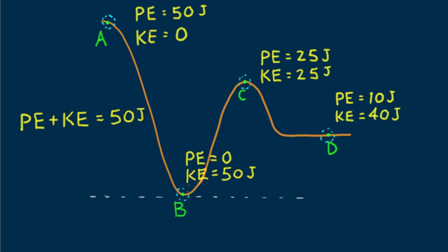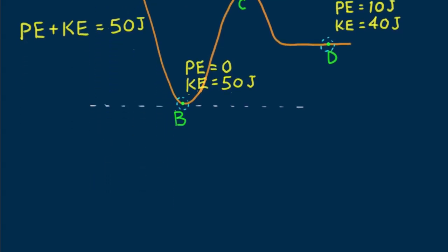And at point D where potential energy is 10 joules, kinetic energy must be 40 joules. So we see that along the wire the sum of the potential energies and kinetic energies is the same.